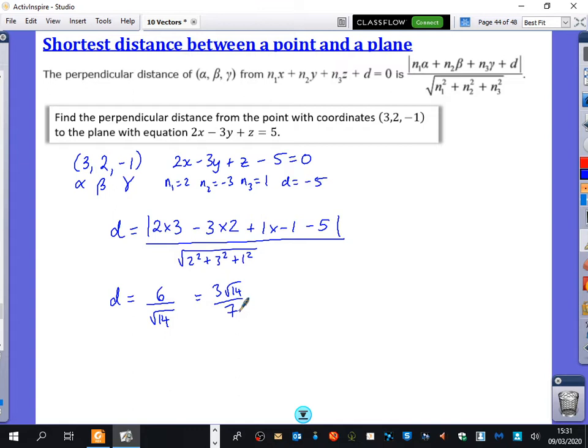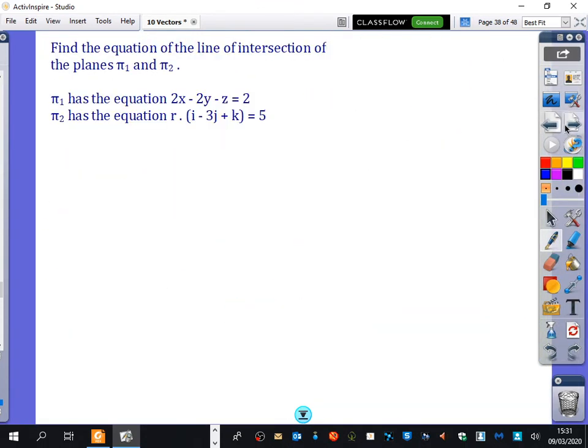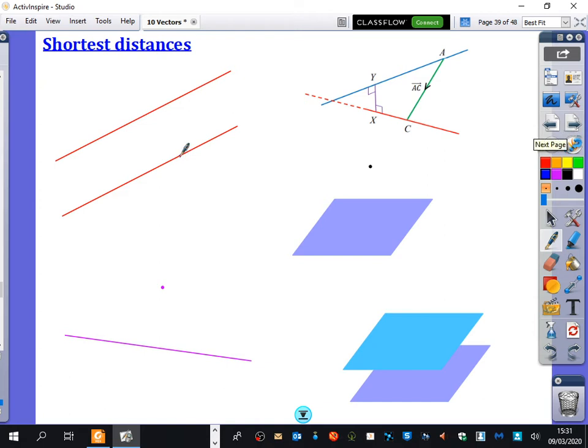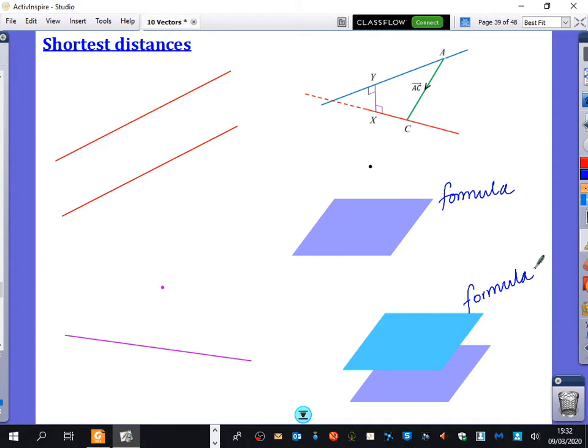So that's for a point and a plane. If we just quickly go back to this thing that we had over here. These ones, this one, this one, and this one. We did that strategy of finding a general point, blah, blah, blah, using the dot product. So this one here, we use the formula. And this one down here, we use the formula. And I'll tell you how we use the formula for that.